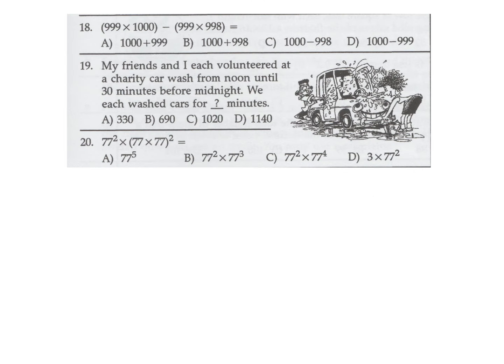999 times 1000 minus 999 times 998. Factor out 999 to get 999 times (1000 minus 998), which is 999 times 2, giving 1998. Now figure out which answer choice is equivalent to 1998 — that's B.